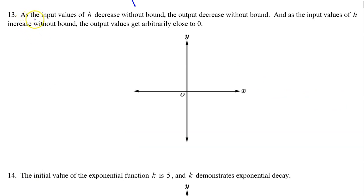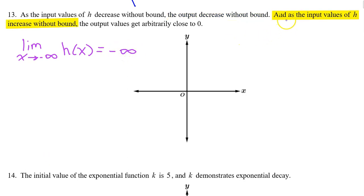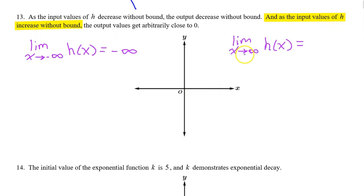Number thirteen: as the input values of h decrease without bound — meaning x is approaching negative infinity — the output values decrease without bound, so the limit is negative infinity. And as the input values of h increase without bound, in other words as x approaches infinity, the output values get arbitrarily close to zero. In other words, the limit of h of x equals zero.